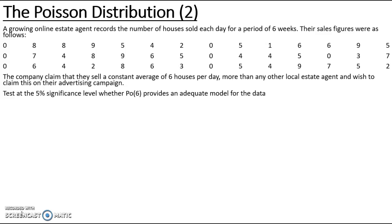A growing online estate agent records the number of houses sold each day for a period of 6 weeks. The company claimed that they sell at a constant average rate of 6 houses per day, more than any other local estate agent, and wish to claim this on their advertising campaign.